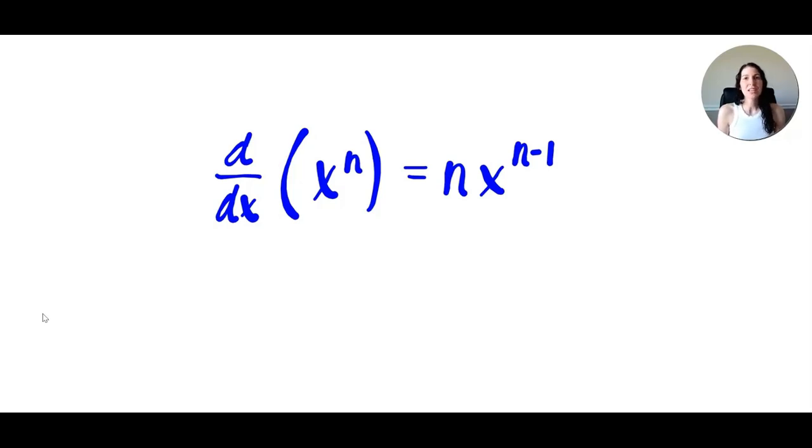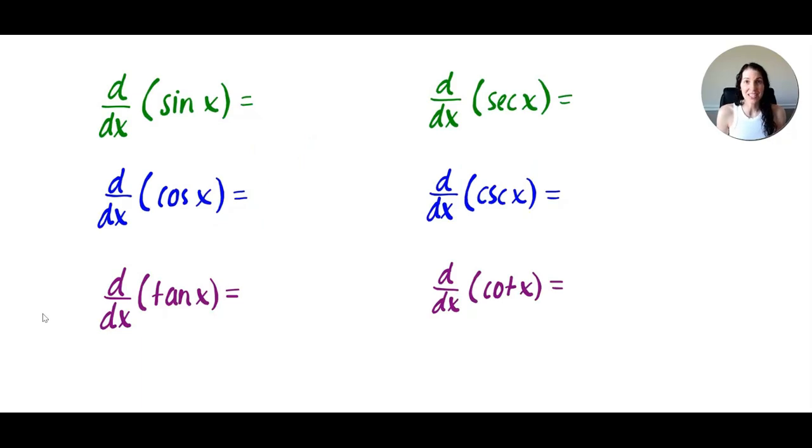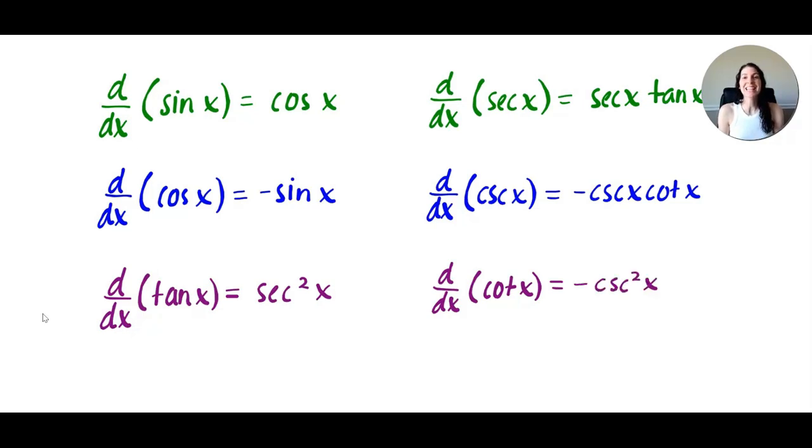The next derivative you need to know is the derivative of all six trig functions. The derivative of sine of x is cosine x. The derivative of cosine x is negative sine x. Don't forget that negative symbol. The derivative of tangent x is secant squared x. The derivative of secant x is secant x tangent x. The derivative of cosecant x is negative cosecant x cotangent x. And the derivative of cotangent x is negative cosecant squared x.